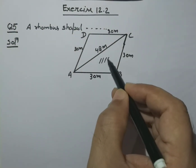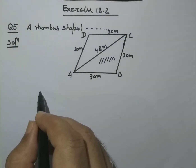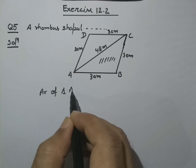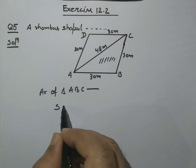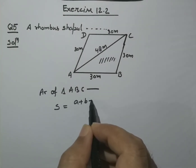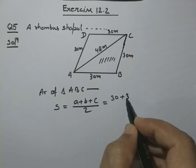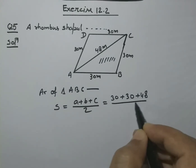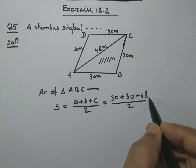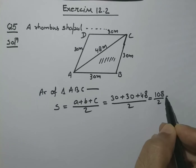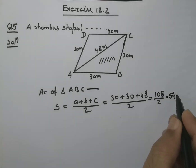First of all, we will find the area of triangle ABC. Here s would be equal to — we know that s = (a + b + c) / 2. The sides are 30, 30, and 48. So s = (30 + 30 + 48) / 2 = 108 / 2 = 54. So children, s = 54 meters.